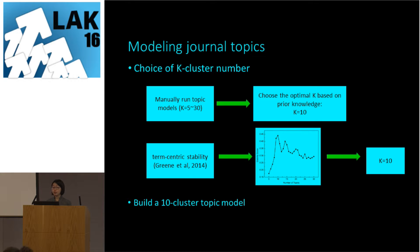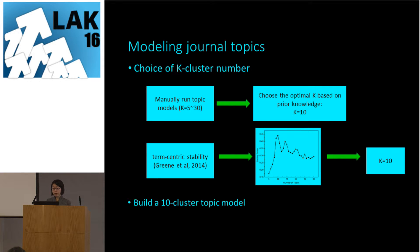To build a topic model, a very important and challenging task is determining the optimal number of topics — the k value. In this study we used two ways to determine this value. First, we used the traditional approach: we manually ran the model with k values from 5 to 30, read the keywords in each cluster, and based on our prior knowledge and experience in this course, determined that k equals 10 best reflects what happened in class.